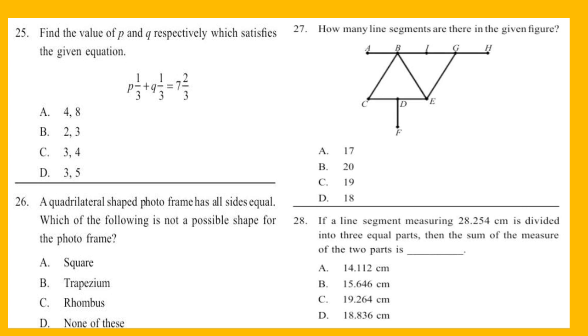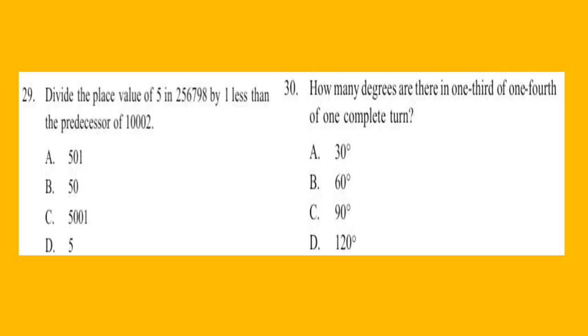Question 28: If a line segment measuring 28.254 cm is divided into three equal parts, then the sum of the measure of the two parts is blank. Question 29: Divide the place value of 5 in 256798 by one less than the predecessor of 10002. Question 30: How many degrees are there in one-third of one-fourth of one complete turn?